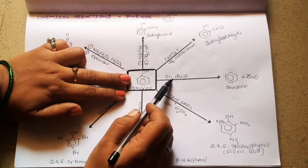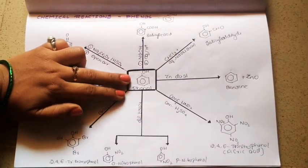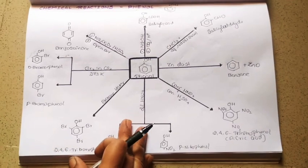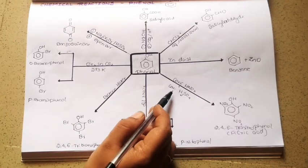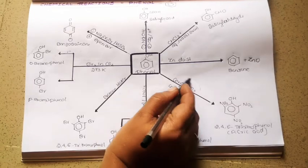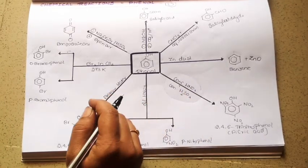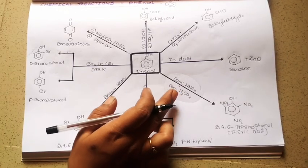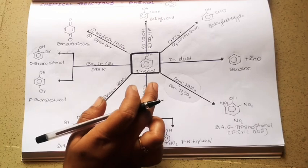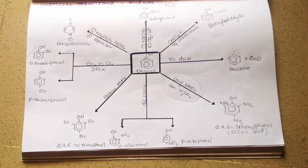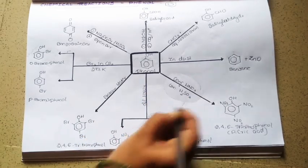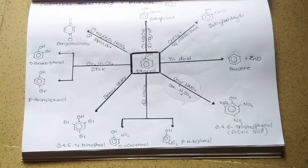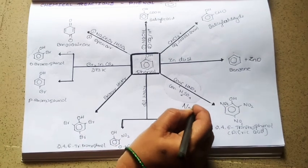Phenol whenever it undergoes reduction gives benzene — that is the first chemical reaction. Similarly, when phenol is treated with concentrated nitric acid and concentrated sulfuric acid, this mixture together is known as nitrating mixture. This is an electrophilic substitution reaction, and the nitrating mixture results in the formation of a nitronium ion (NO₂⁺), which acts as an electrophile.